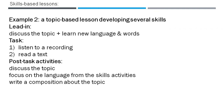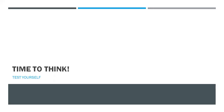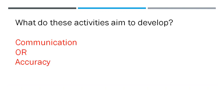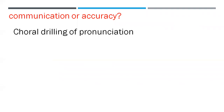Now it's time to test your comprehension of this lecture. What do these activities aim to develop — would they rather focus on communication or accuracy? Accuracy means how accurately you use the language forms themselves, rather than communicating the idea. First activity: choral drilling of pronunciation — would it go to communication or accuracy?